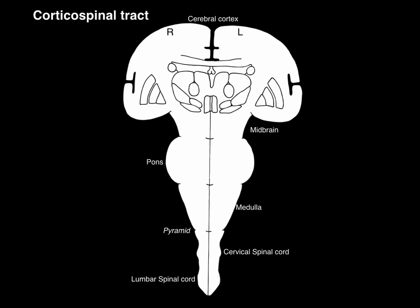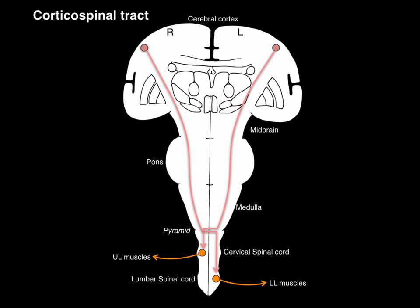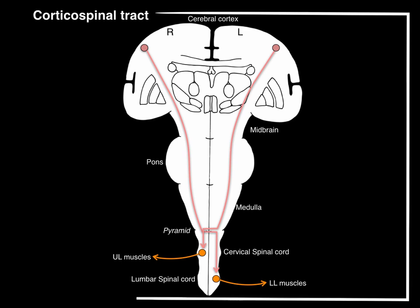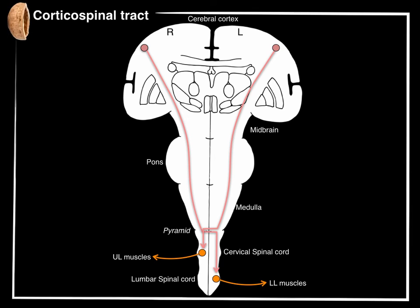Here we have the corticospinal tract with upper motor neurons and lower motor neurons — and that, my friends, is the corticospinal tract in a nutshell.